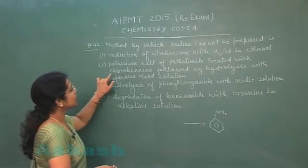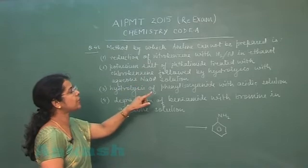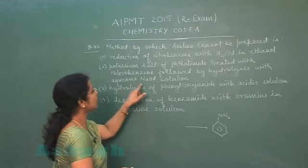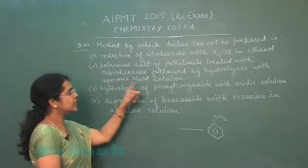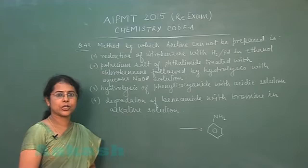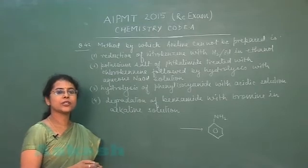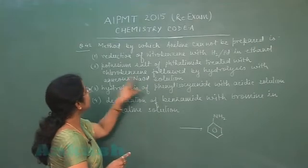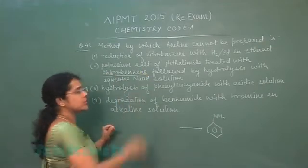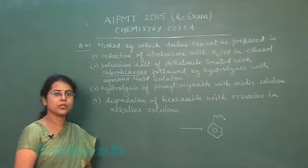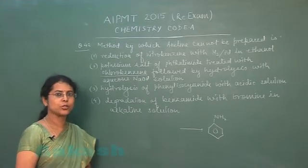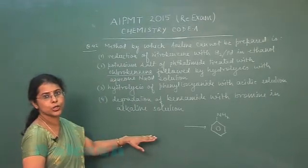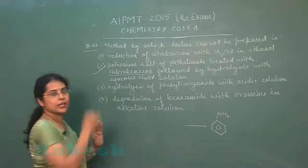The second option is the potassium salt of phthalimide treated with chlorobenzene, followed by hydrolysis with aqueous NaOH solution — this is the Gabriel synthesis (Thalamide reaction). This reaction proceeds via an SN2 mechanism, but chlorobenzene cannot participate in nucleophilic substitution reactions. Therefore, this method cannot be used to prepare aniline, making it the likely answer.